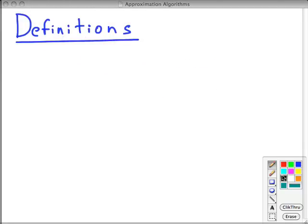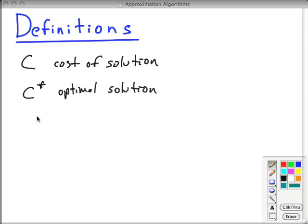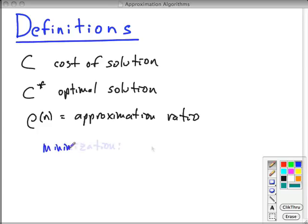Just a few quick definitions. We're going to use C to represent the cost of a solution for our optimization problem of size N, and C star to be the optimal solution. Now we're going to use ρ(N) to be what we call an approximation ratio. For example, if we have a minimization problem, then C over C star is bounded by ρ(N) this way.